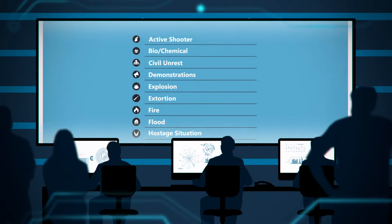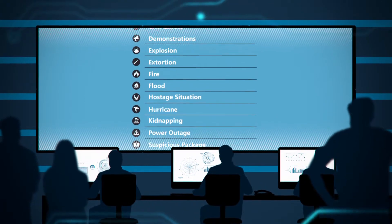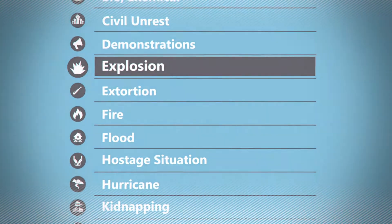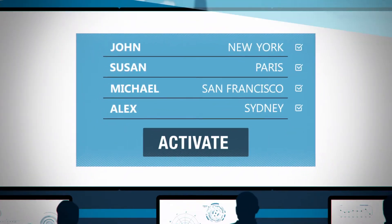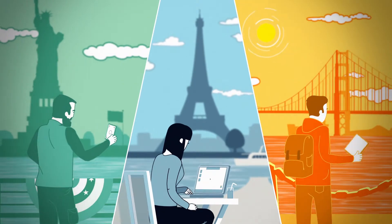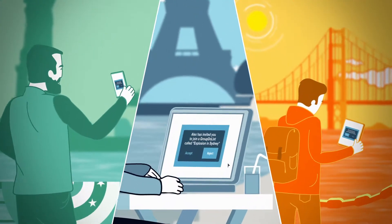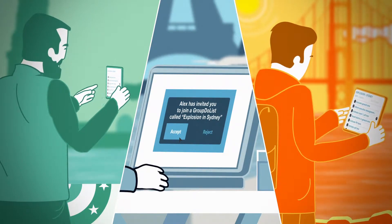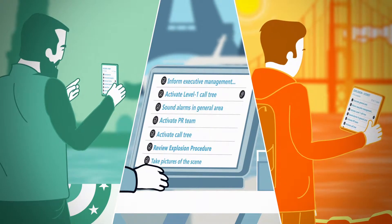Prepare standard and emergency operating procedures in advance or on the fly. Activate them with one tap, instantly sending out invitations to mobilize your team. As invitations are accepted, all procedures are pushed down into team members' devices.